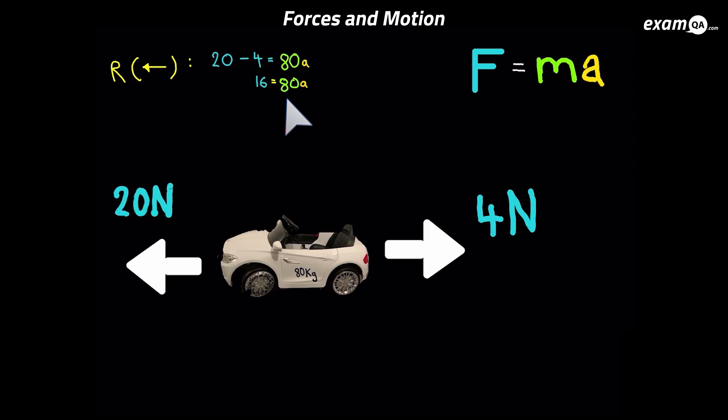Of course, like I mentioned earlier, that 16, we can just do it mentally. But we need to show our working out like I've done here. So we resolve the forces and we chose a positive direction. The 20 was positive and the 4 was negative, giving us that 16. So let's carry on and find out what A is. We just need to make A the subject, divide both sides by 80, and we get A equals 0.2. And that's how you use that formula. Let's try another one.